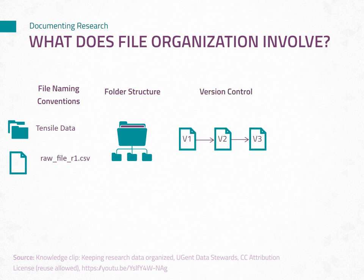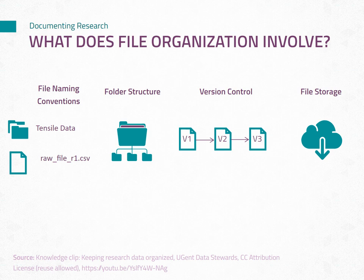Three, version control is essential for tracking changes, collaborating with others, and ensuring document integrity. We will delve into the benefits of implementing version control systems, such as Git or cloud-based solutions, to manage file revisions and facilitate collaborative work. And four, choosing the right file storage solution is crucial for secure and accessible data management. We will explore different options, such as local storage, network drives, or cloud-based platforms, and discuss the considerations for selecting the most suitable file storage methods for your needs.